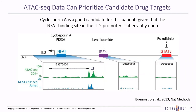Therefore, ATAC-seq has instructed that perhaps cyclosporine A, which is an NFAT inhibitor, might be a good candidate for this patient displaying aberrant IL-2 expression. Furthermore, we can use ChIP-seq and integrate that data into ATAC-seq. ChIP-seq for NFAT confirms the presence of NFAT at this promoter at the specific locus where ATAC-seq shows the chromatin is open, demonstrating how ChIP-seq and ATAC-seq data can be integrated to complement each other.